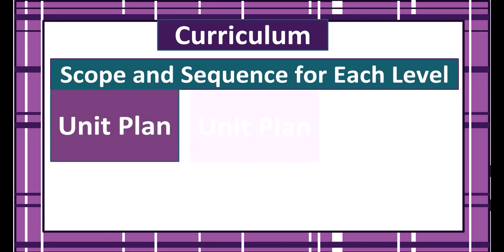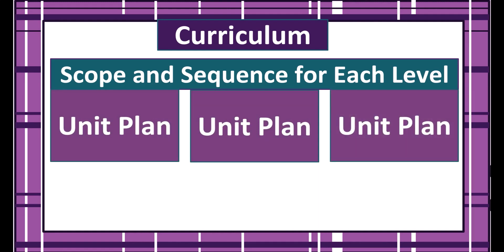The scope and sequence is made up of units that will be taught through that learning cycle. In the scope and sequence, the units are sketched out to give a clear idea of what students will learn at each level. These unit sketches are developed more fully in the unit plans themselves.